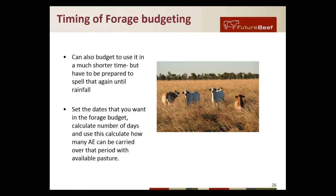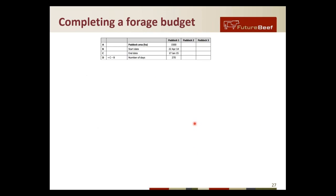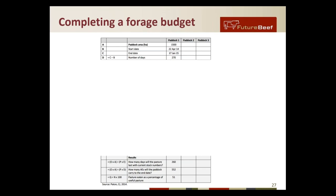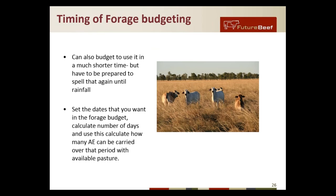If you don't want to budget out to the end of the dry season you can just put whatever length of time you like in your budget — even 10 days if you want to stock at a high rate. You just set the dates you want in the forage budget, use this to calculate how many AE can be carried over that period with the available pasture, and work backwards. The important thing is that when you get down to your set residual level, you take the stock off and allow it to rest until the rain comes again. Whether that takes 20 days or 100 days, as long as you stick to the residual you set and rest it until that rainfall and it starts growing again.